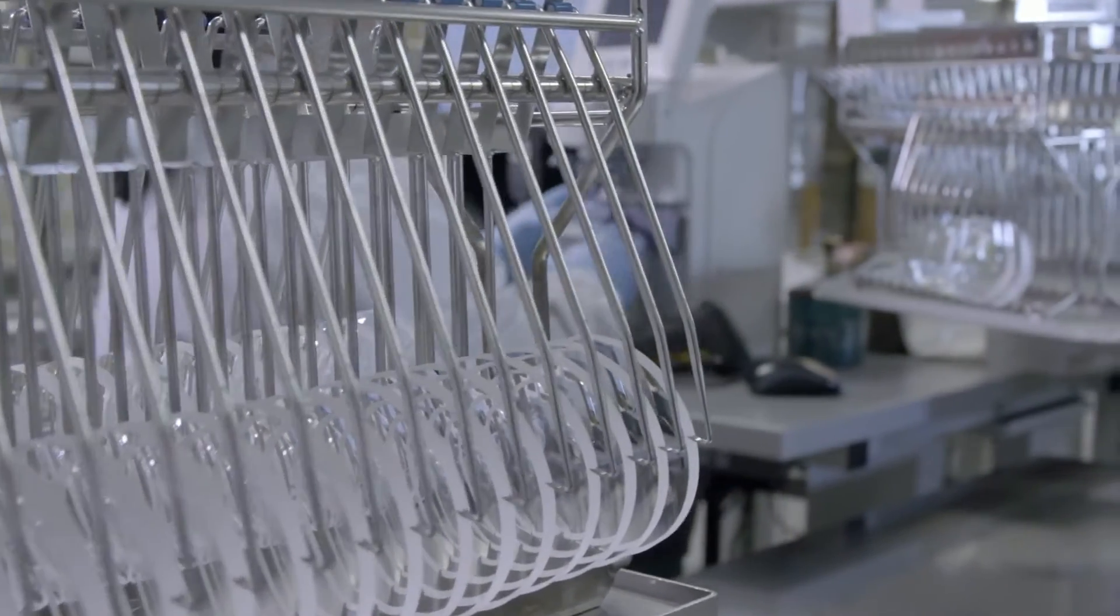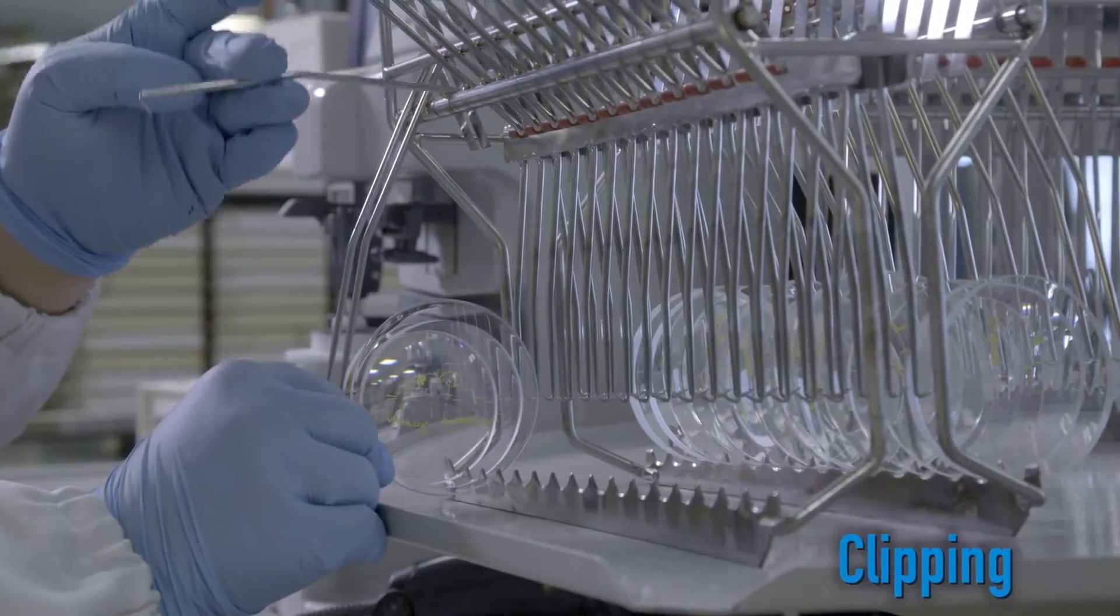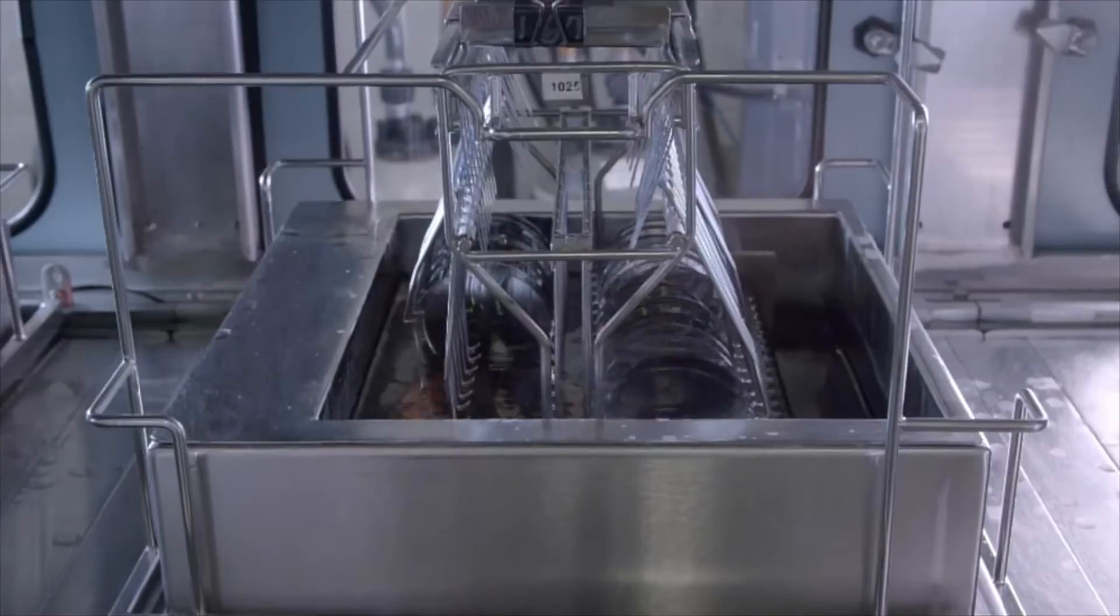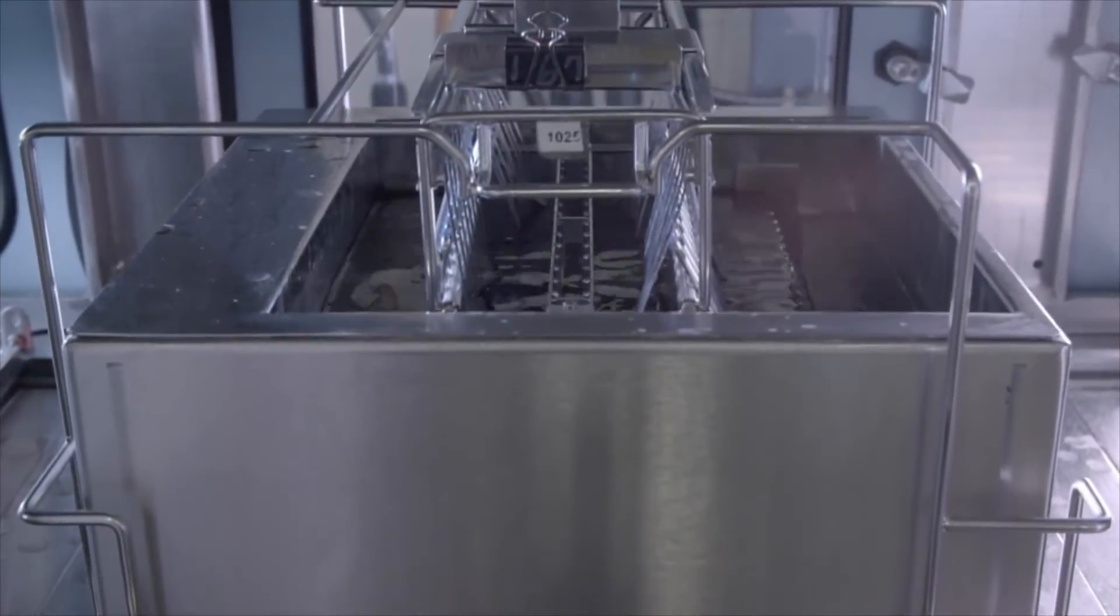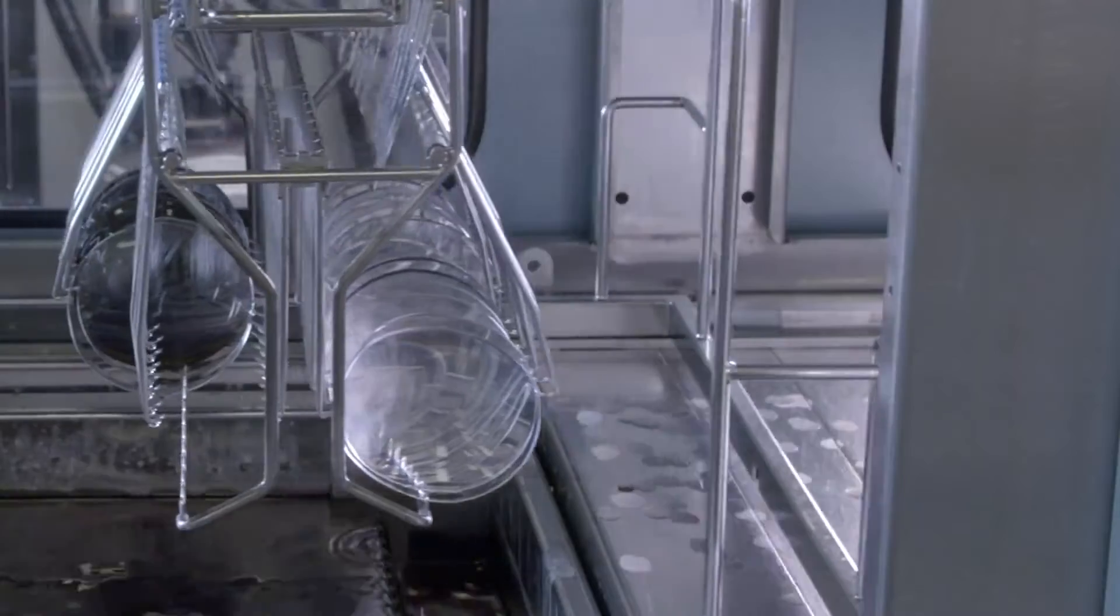The lenses are sorted and then placed on clipping baskets. Each basket of lenses goes through several baths in order for the lenses to be cleaned and treated as required. This is where the scratch resistant treatment is applied.